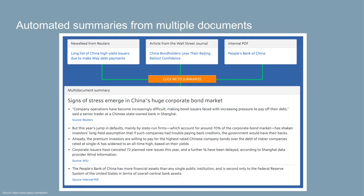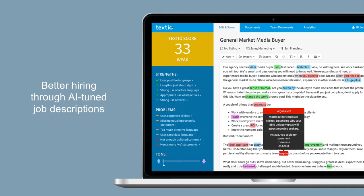Another great example of natural language understanding is creating summaries of multiple documents. A New York-based company called Agolo uses deep learning techniques to generate summaries — you give it one or more documents and it preserves the meaning as it condenses. Anyone who's ever had to summarize emails or documents is excited about the possibility of having AI do it instead.